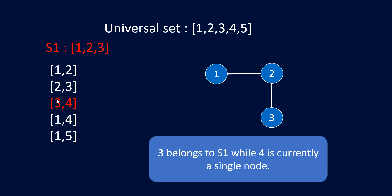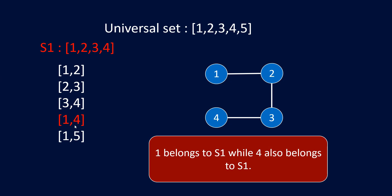For edge (3,4), node 3 is already present in set S1, and node 4 is a single independent node. We put node 4 into the set by attaching it with node 3, so all four nodes are now connected and present in this set. Now comes the interesting part — edge (1,4). If I want to add an edge for (1,4), I first check whether these belong to different sets. But both nodes are already present in set S1. Attaching them would create a cycle, which we do not want. So (1,4) is our answer — the edge that was added which converted the tree into a graph with a cycle.